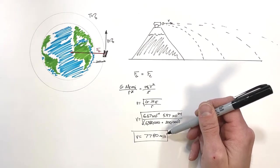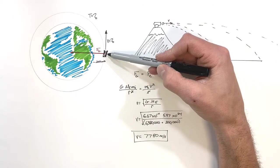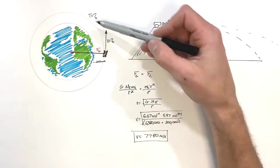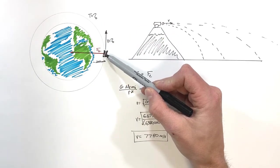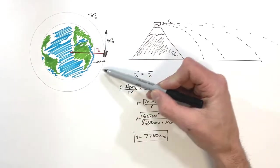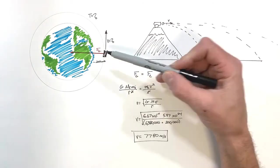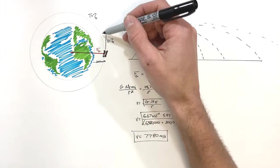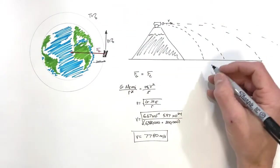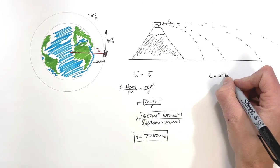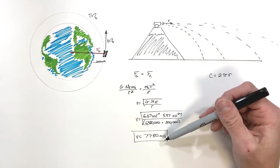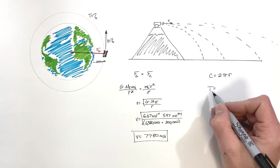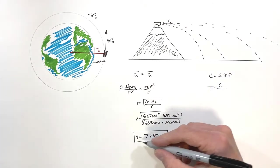Next, let's find the period of this satellite. The period depends largely on the velocity we already found, plus some geometry. The period is simply the time it takes for the satellite to travel once around the Earth — one full orbit. The satellite traveling at 7,780 m/s must cover the entire circumference of its orbital circle, where circumference equals 2πr. Knowing speed and distance, the period equals circumference divided by velocity.